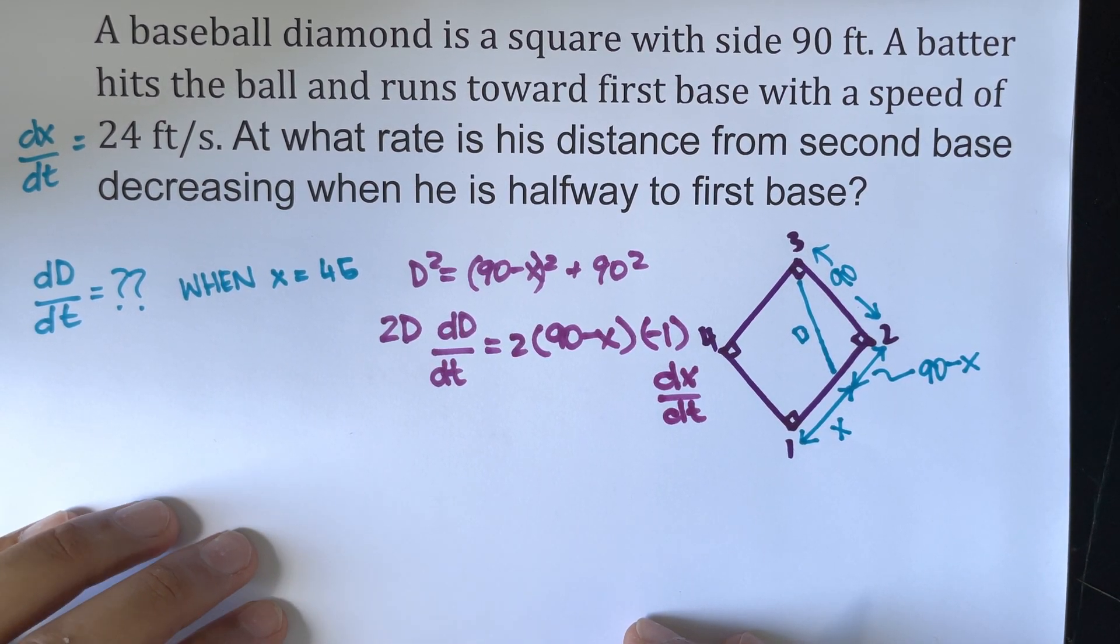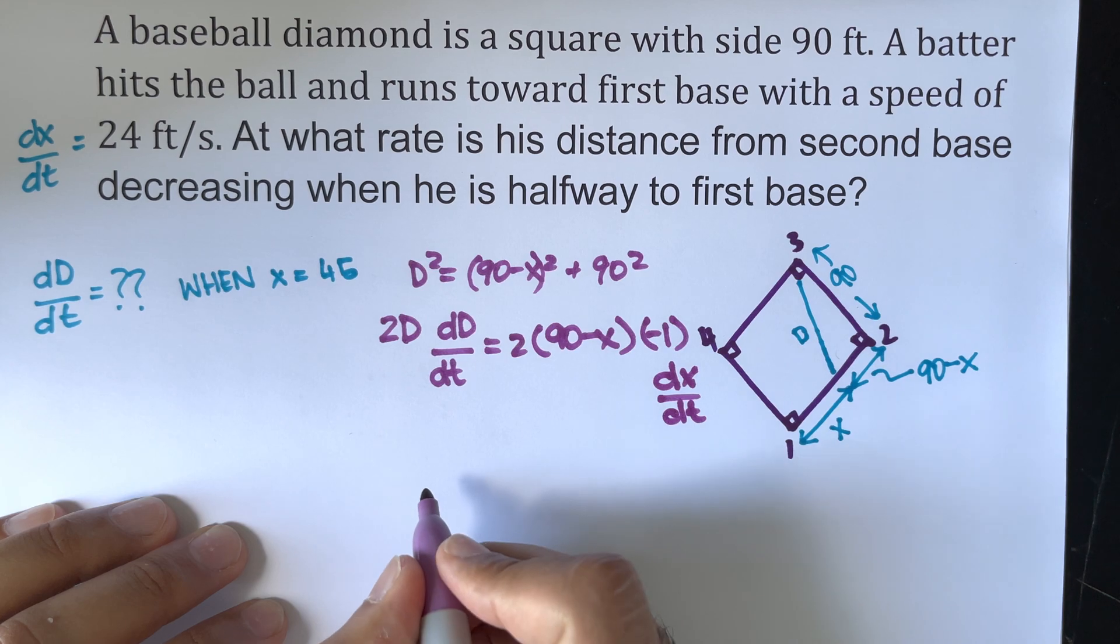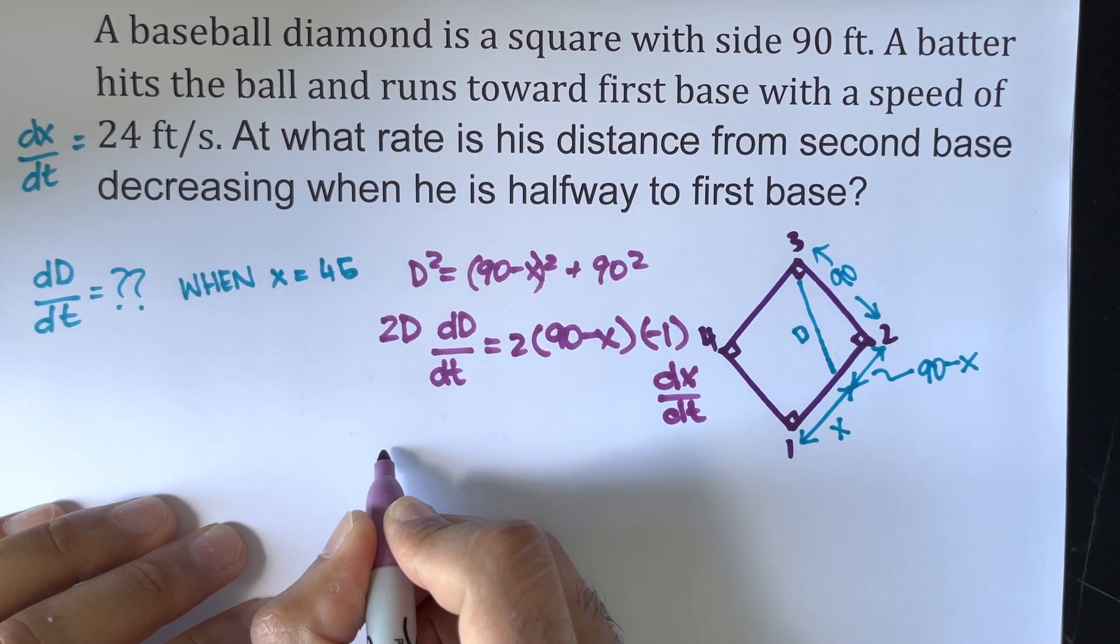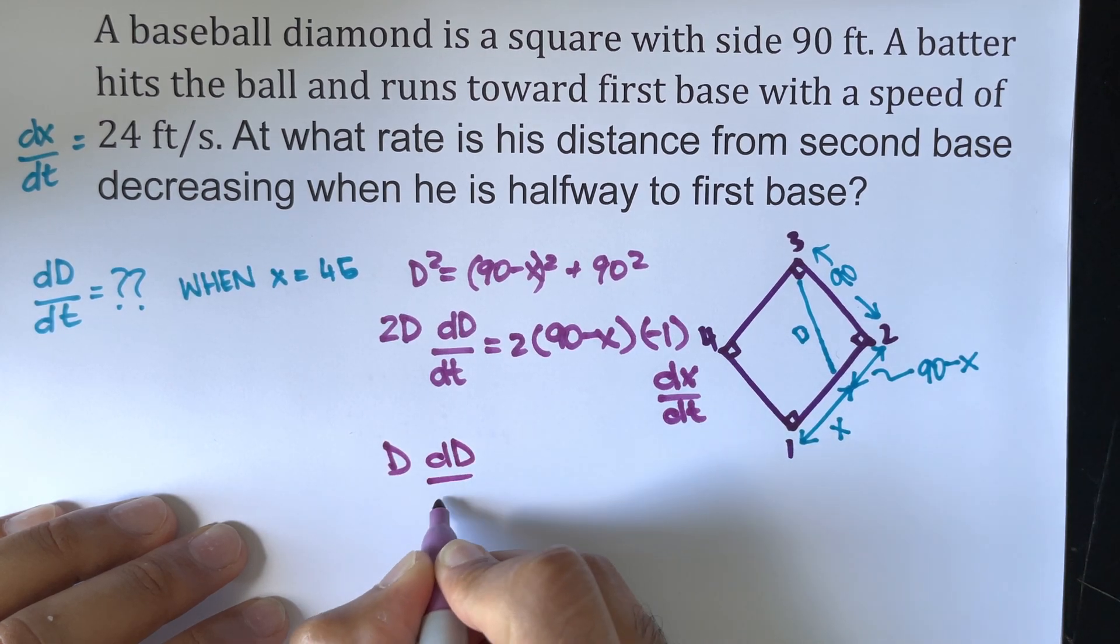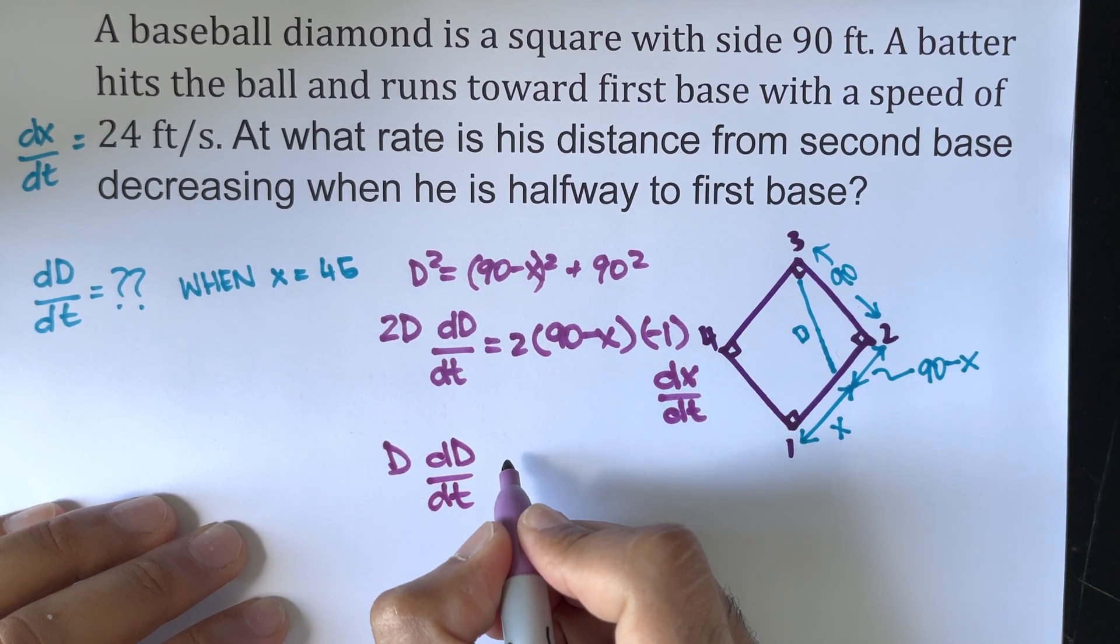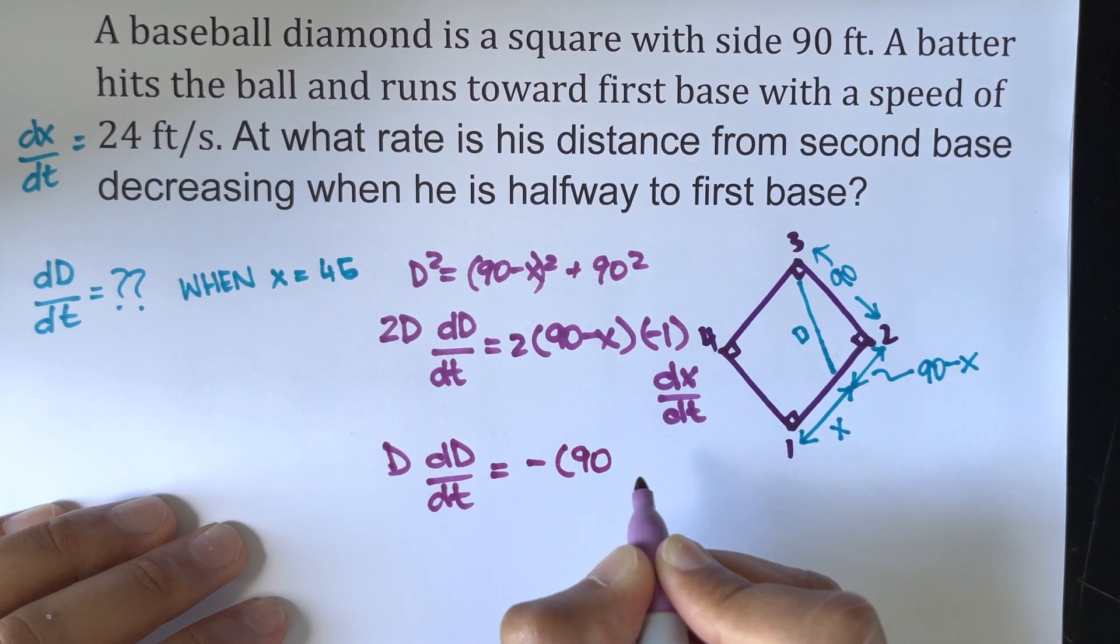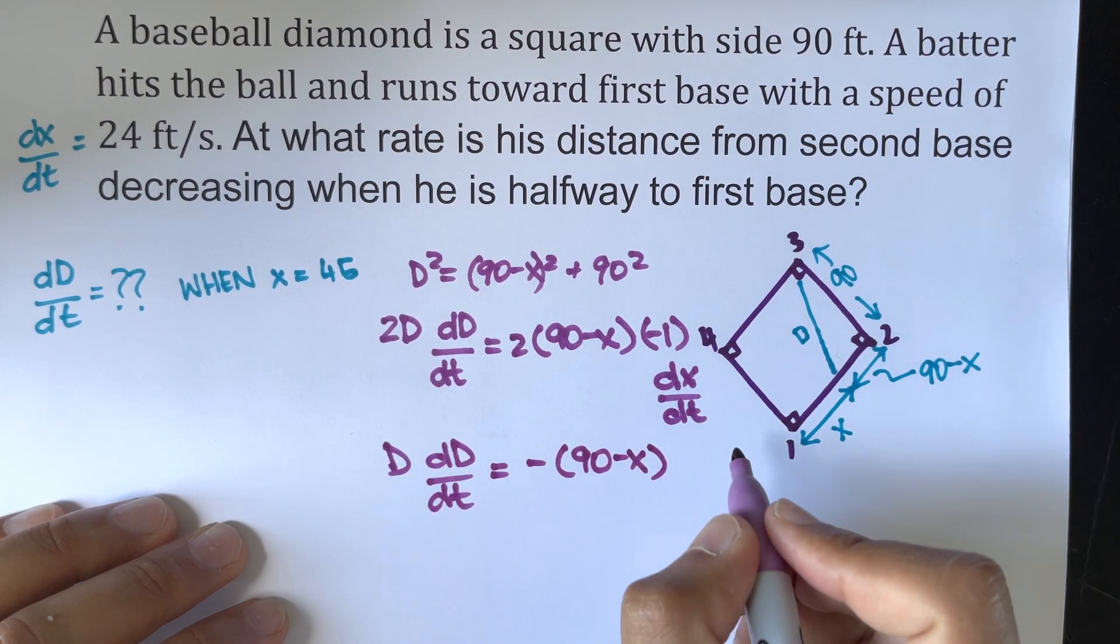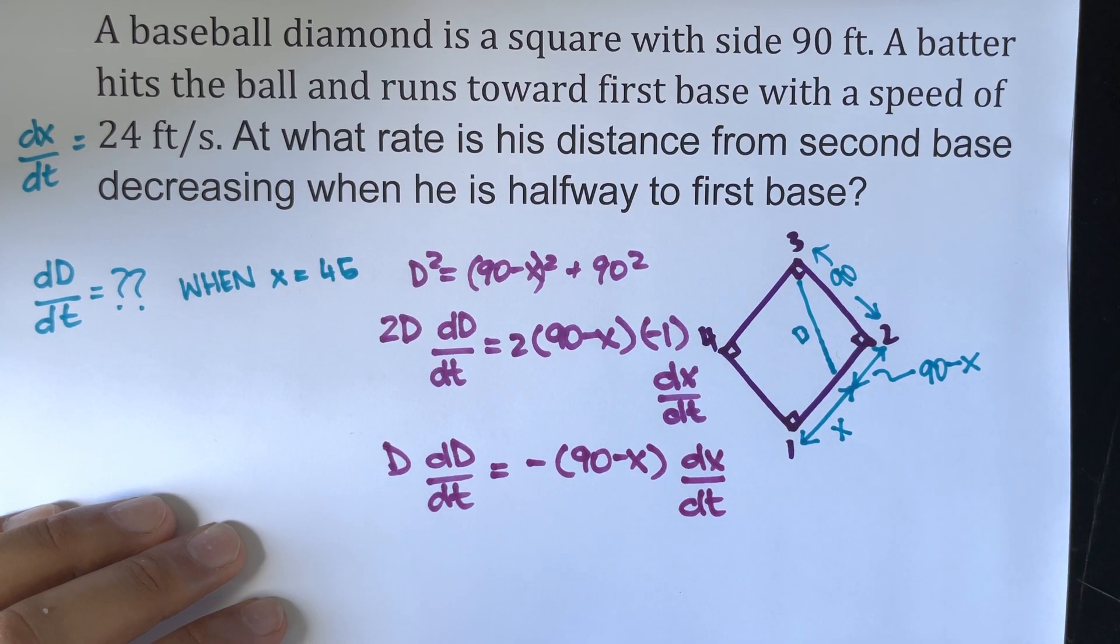Now we can solve for, well the 2's will cancel off, and I will write the next step when it's simplified. When it's simplified, we will get d·dd/dt being equal to negative (90 minus x)·dx/dt.